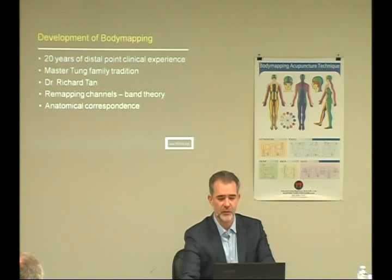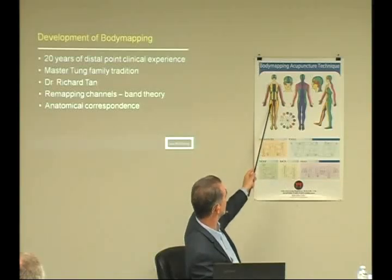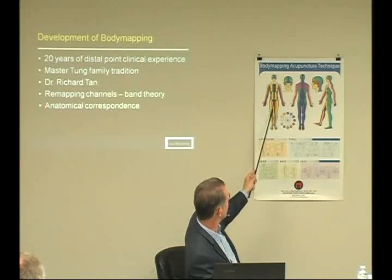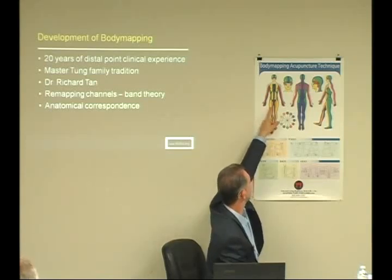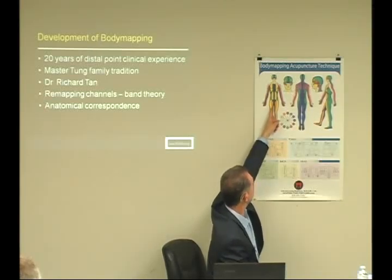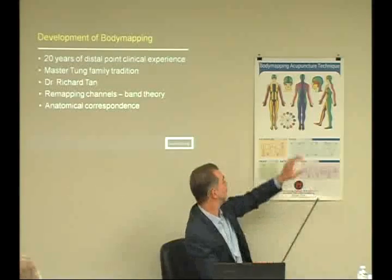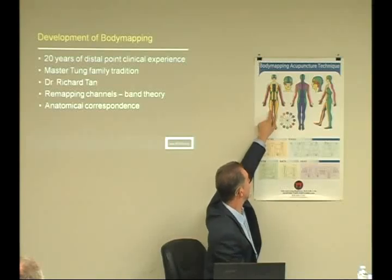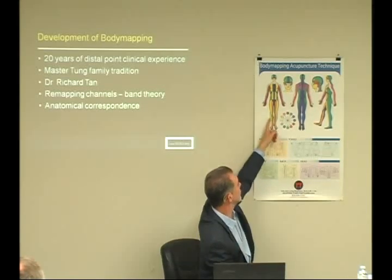See Dr. Tan's books for further information—there are lots of Tung books out there. Dr. Young also has a great series of books. Band theory literally refers to bands of channels versus lines and dots—where exactly is the influence of these channels? I think channels go from one to the other as a band. On the stomach channel, for example, there's a huge area that stomach encompasses before it meets gallbladder again. That whole area is stomach channel, and where lines are meeting they're actually merging, so you get effects on both channels.